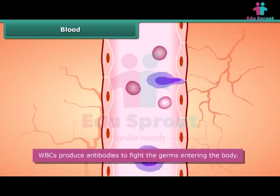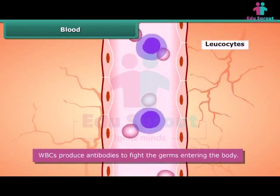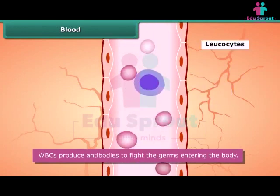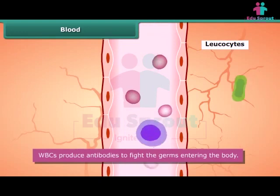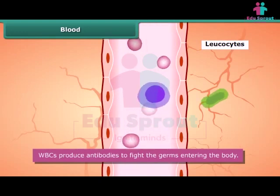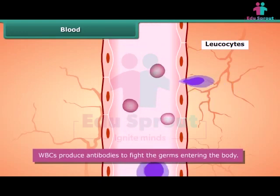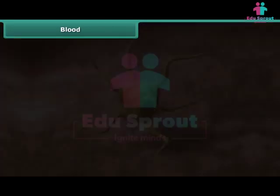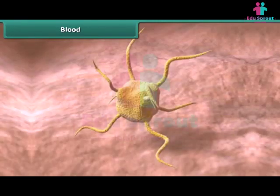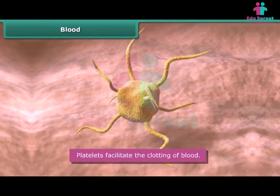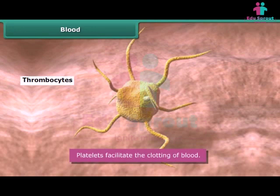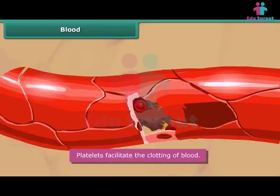WBCs are also known as leukocytes. They come in many different shapes and produce antibodies to fight the germs entering the body. Platelets, also known as thrombocytes, are oval in shape and facilitate the clotting of blood.